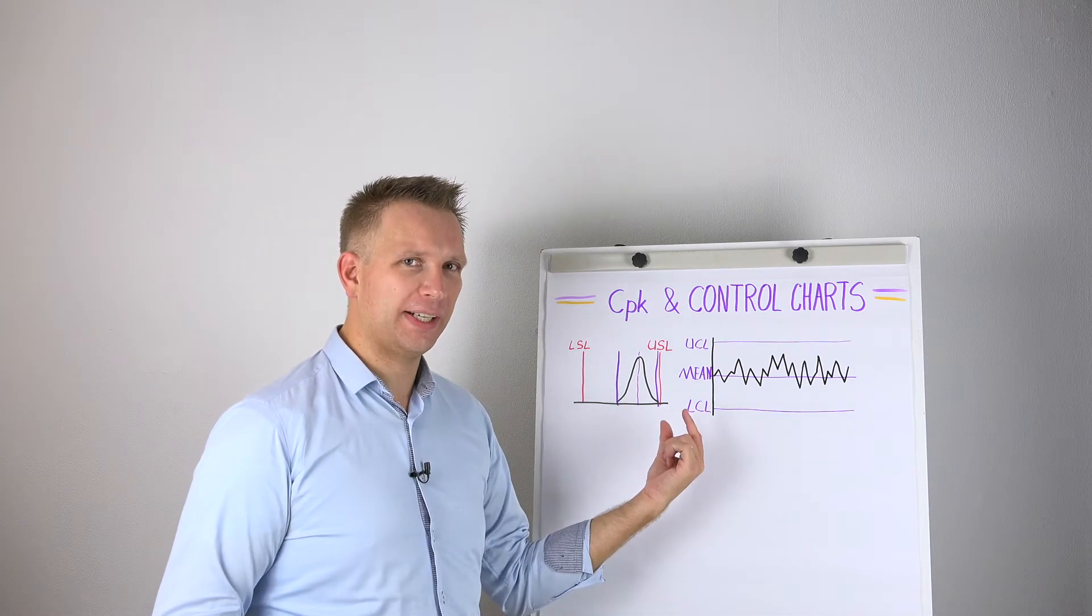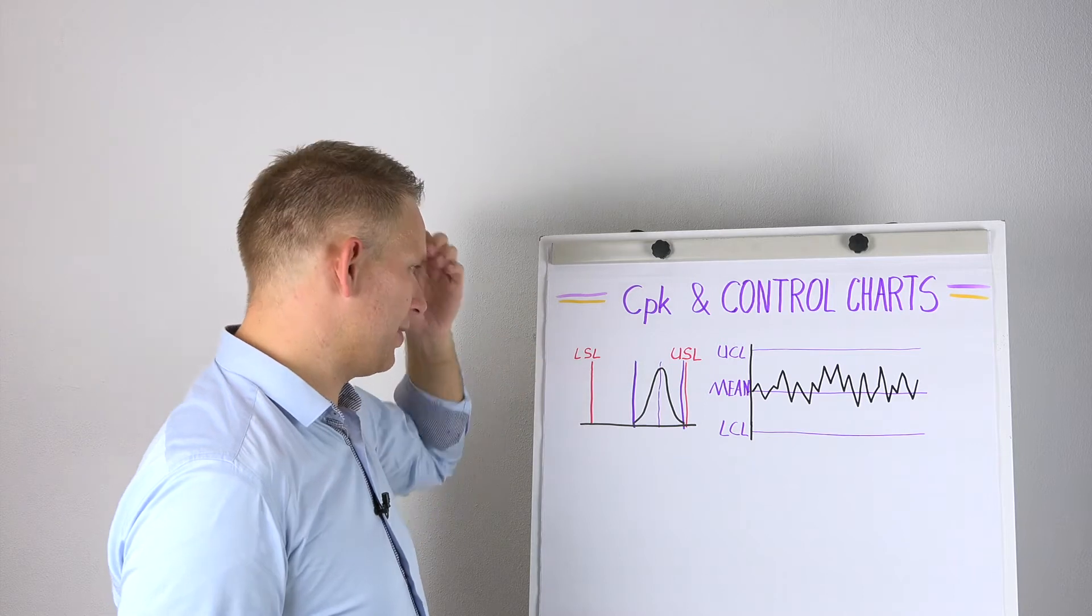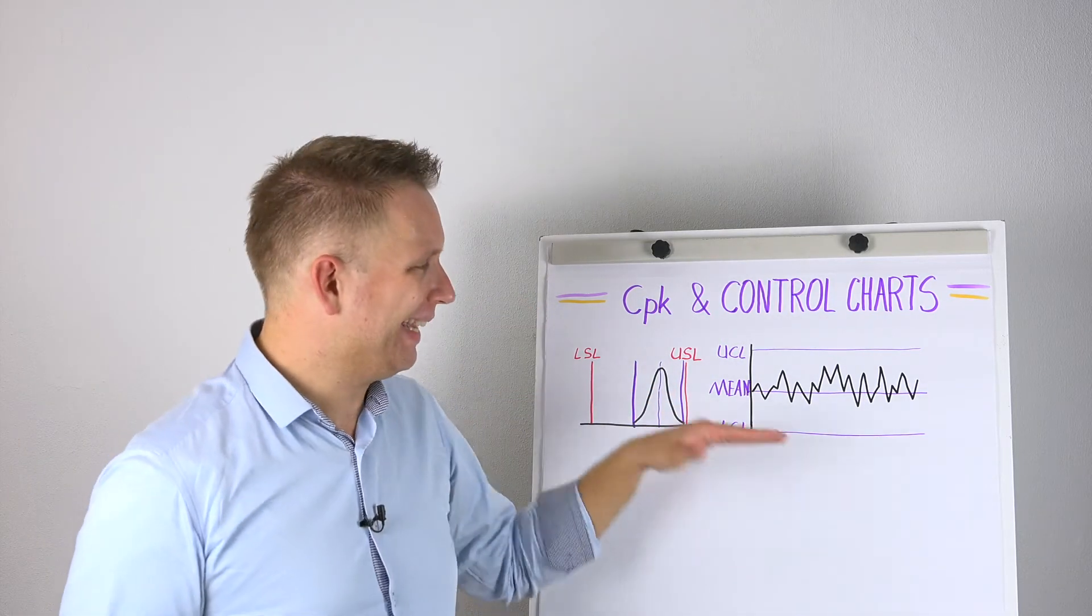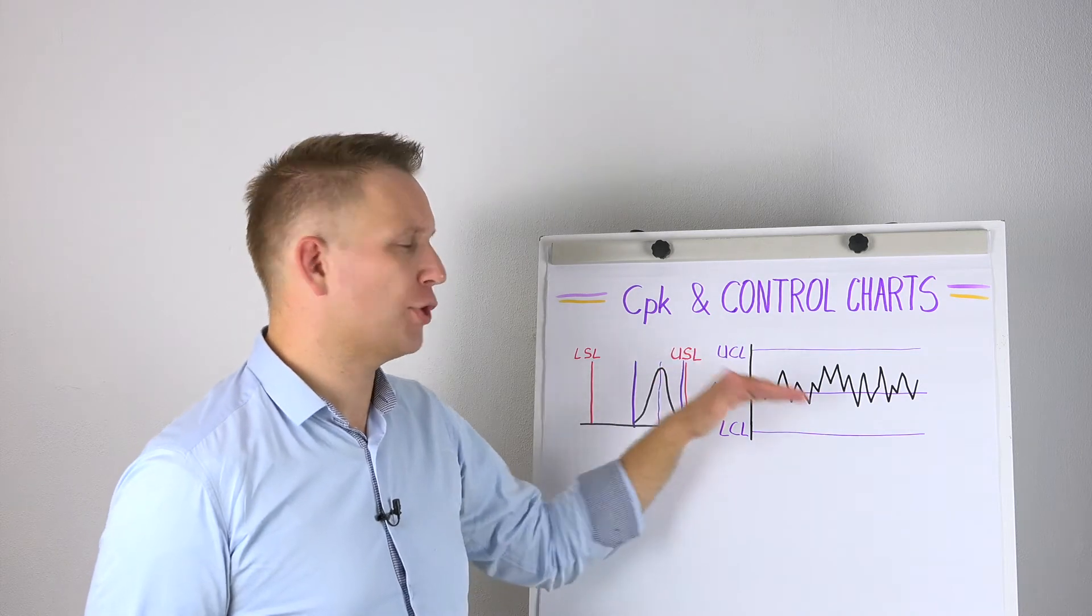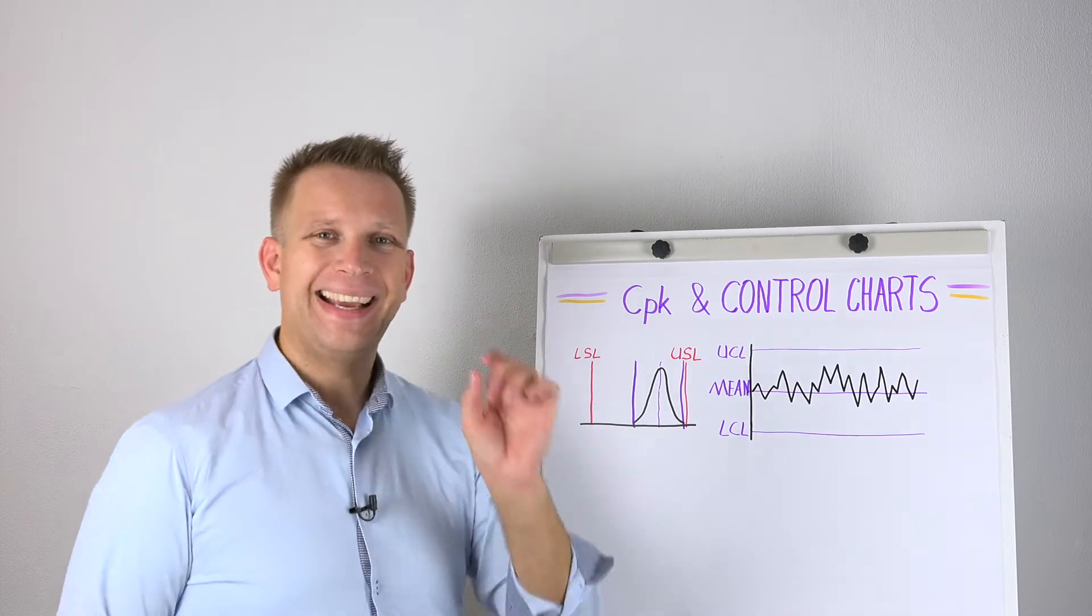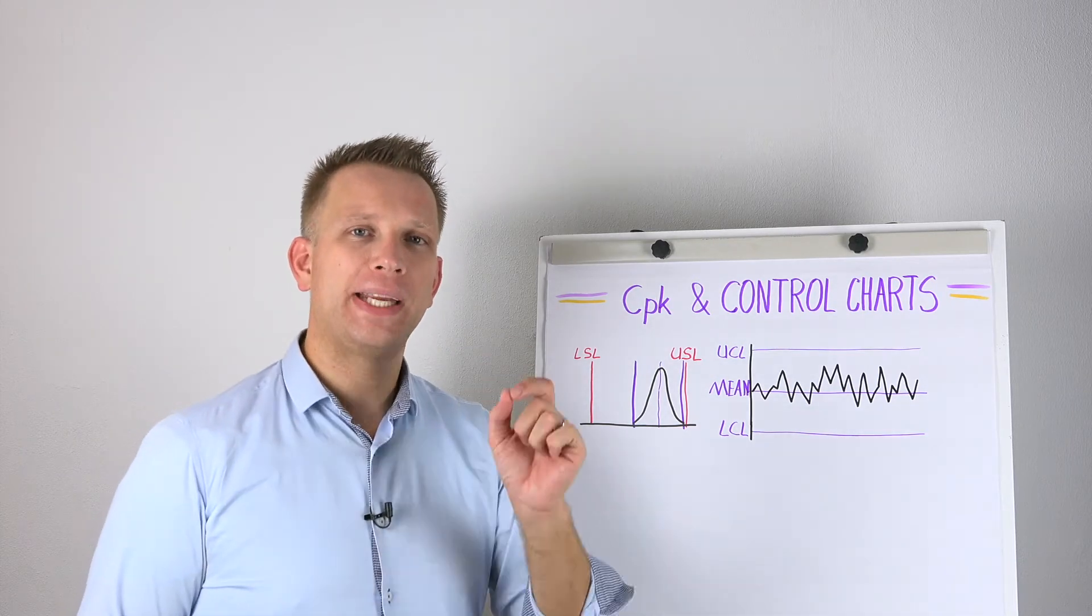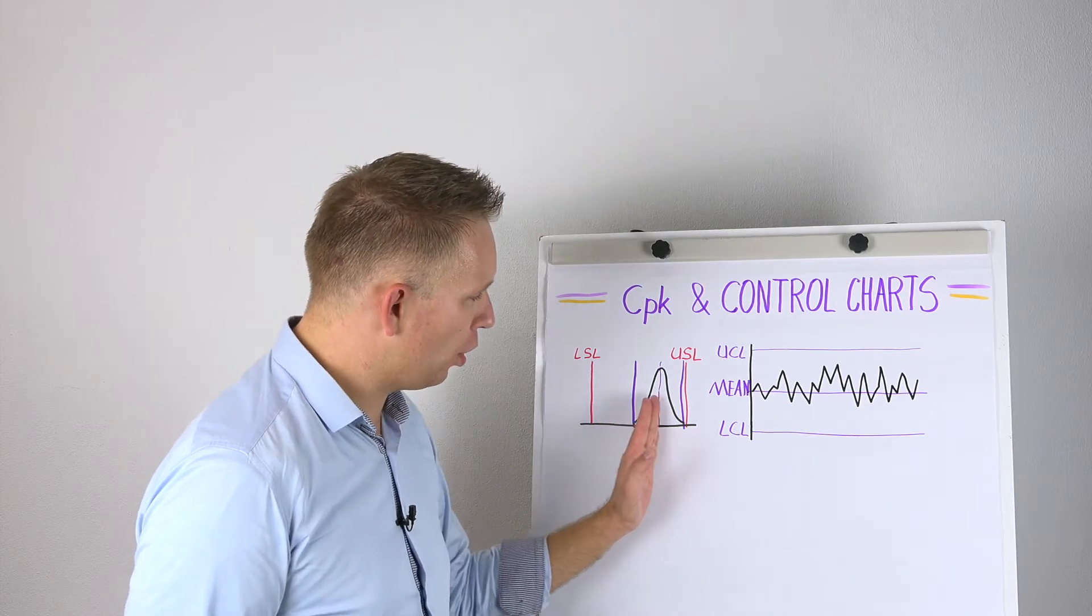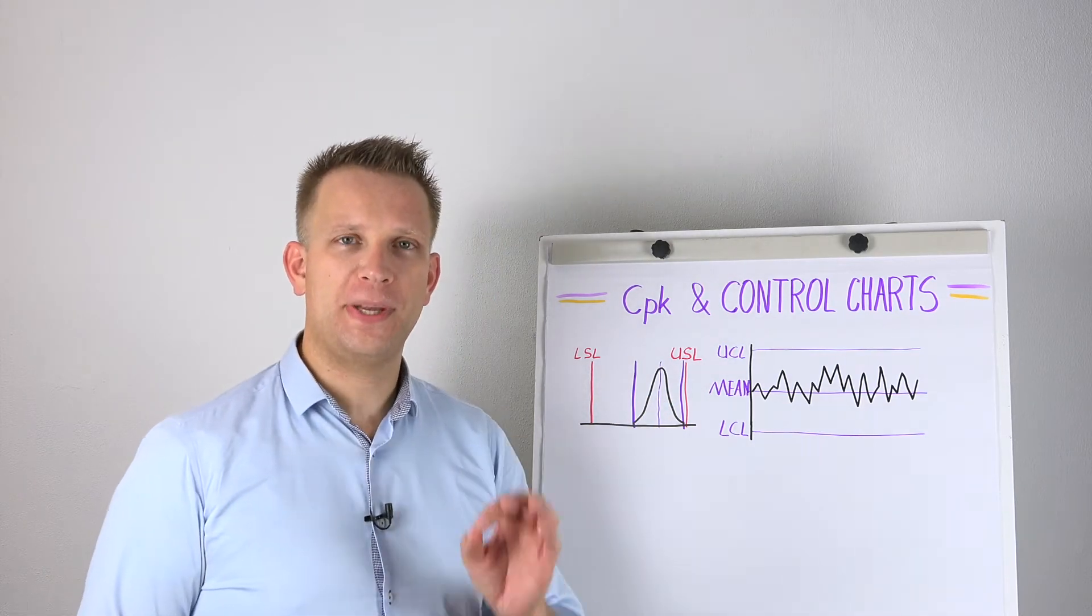And you see that they are not directly linked. If your process is behaving like it has always behaved, it is centering around the mean of its own control chart. But as we see in this example, it is not centered between the two specification limits. This process is off-center with regard to specifications.